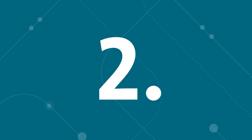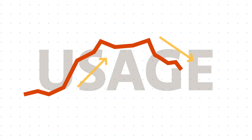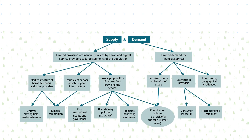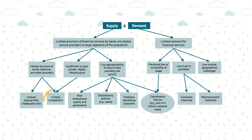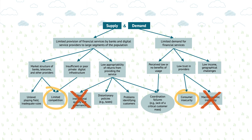Then, look at times where service usage significantly increased or decreased in the past. What changes encouraged people to modify their behavior? The answers can help you pinpoint the binding constraints on service usage and discard less important factors.